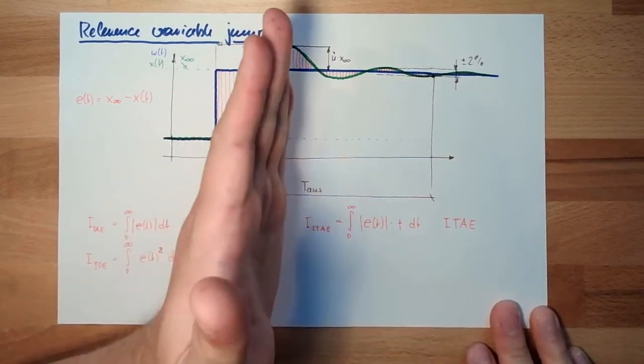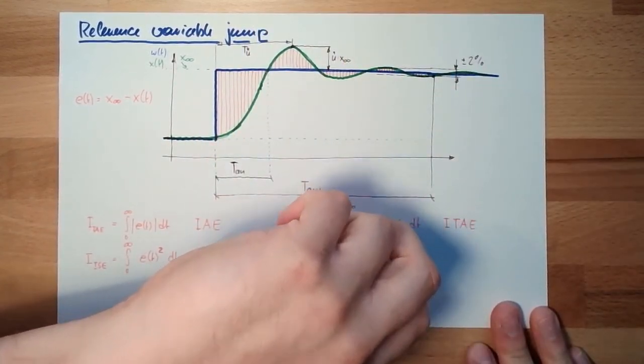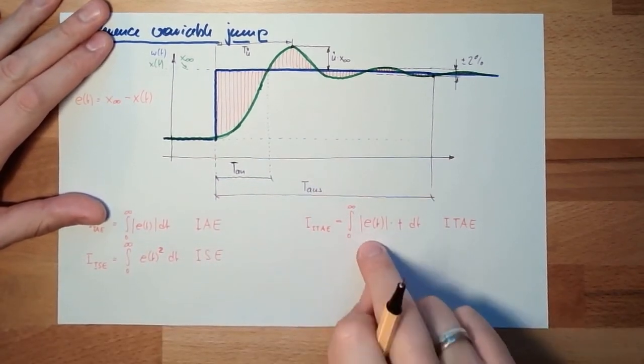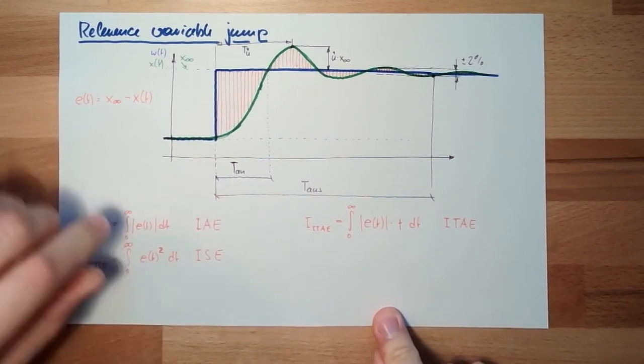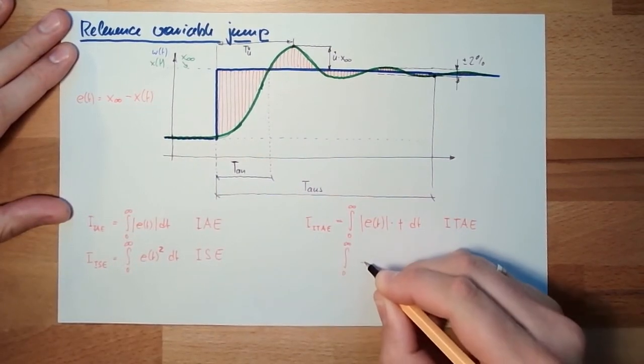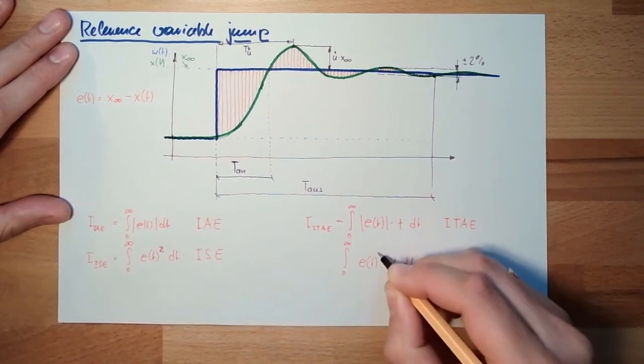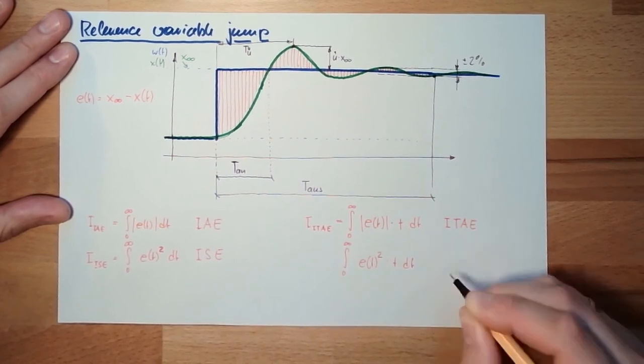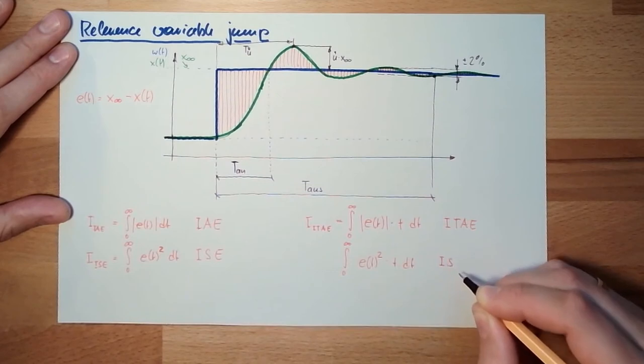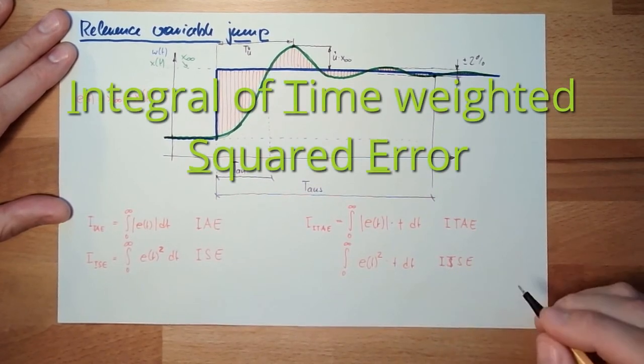The big difference to this one is that later errors are more, have more impact on this number which is coming out here. And of course, I can make the same thing here with the squared. So I sum up the error multiplied by t, and this time I square it. That's the integral of time-weighted squared error, ITSE.